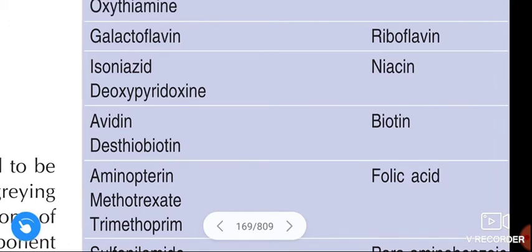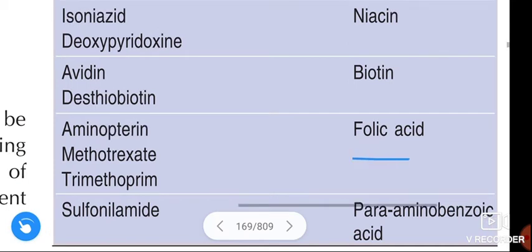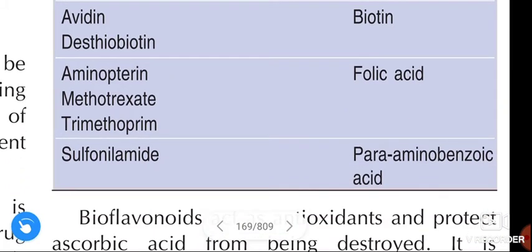Avidin, which is present in raw egg, and Desthiobiotin are antivitamins of Biotin. Aminopterin and Methotrexate are the antivitamins of Folic acid. Sulfonamide is the antivitamin of Para-aminobenzoic acid (PABA).